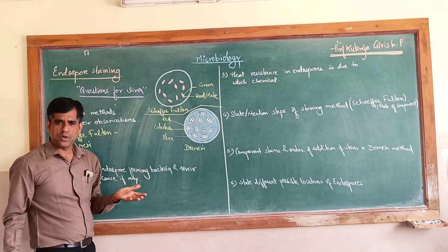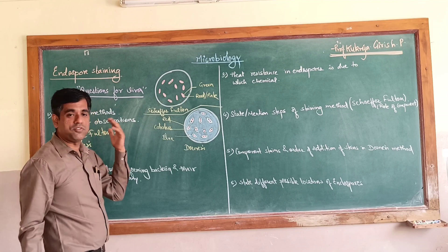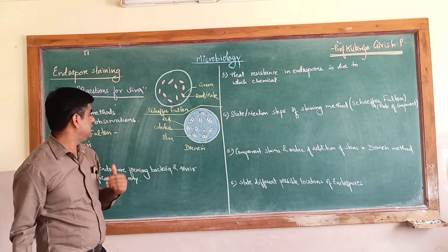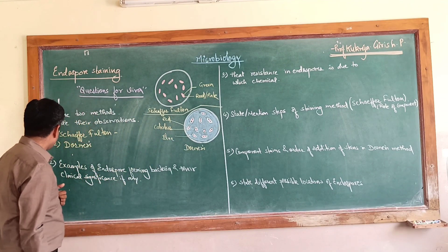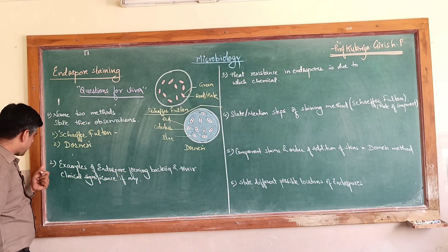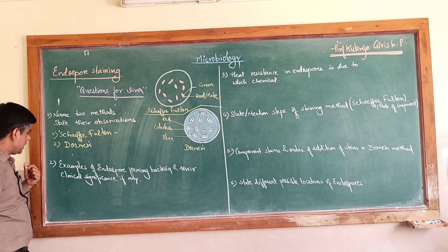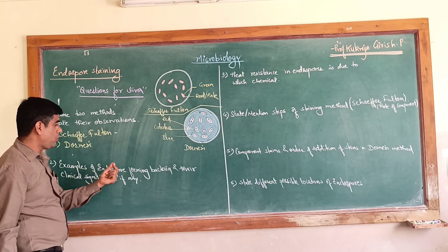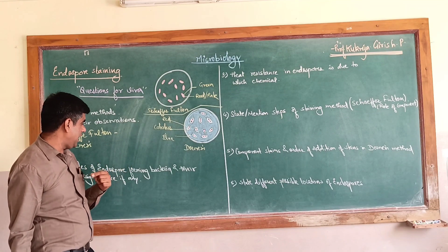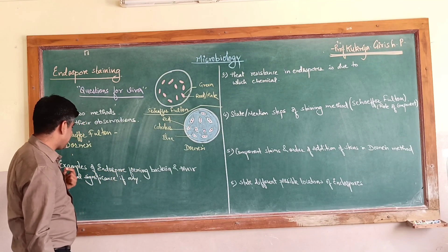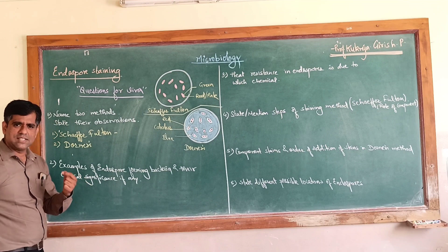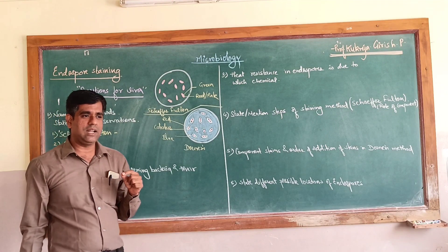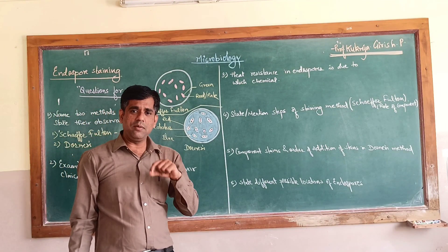Dorner introduced this method in around 1922, which was later modified by Schaeffer and Fulton in 1933. The second question: state examples of endospore-forming bacteria and their clinical significance.